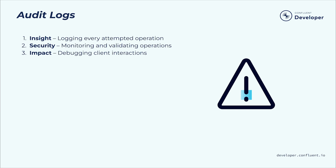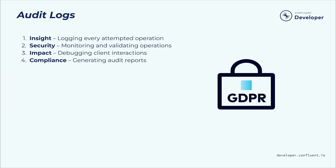Number three: understand impact. You can use the logs to debug client interactions and spot unusual activities and system metrics. The logs can help you see who and what is impacted if there are issues. If there's an ongoing issue, the log allows you to see who and what services are impacted, what got you to that point, and then allows you to communicate with stakeholders as the situation progresses. Number four: prove compliance. Logs can help you generate audit reports in line with internal policies and external regulations, and create an official record if there is a security breach.